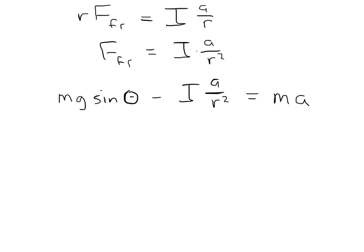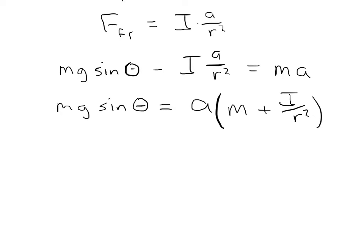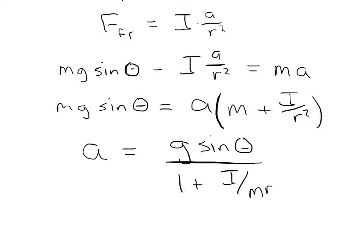Once we substitute, we can solve for a. Moving all acceleration terms to one side: mg sinθ equals a times (m plus I over r²). Factoring out a and dividing through, the acceleration is equal to g sinθ divided by (1 plus I over mr²).